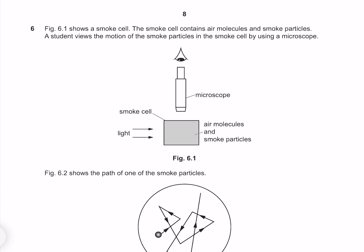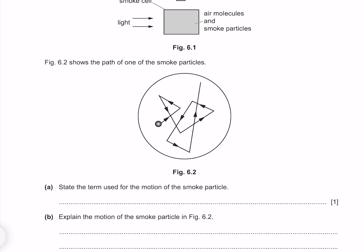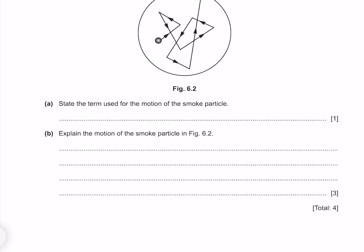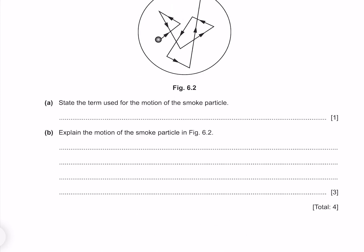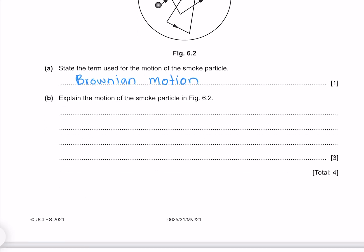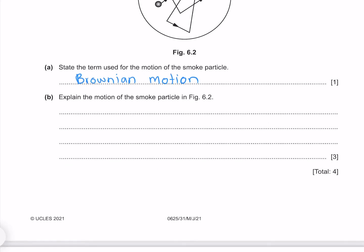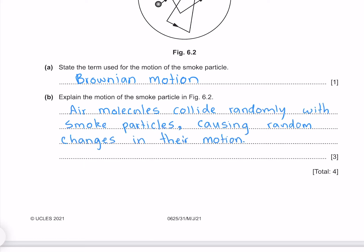Figure 6.1 shows a smoke cell. The smoke cell contains air molecules and smoke particles. A student views the motion of the smoke particles in the smoke cell by using a microscope. Figure 6.2 shows the path of one of the smoke particles. State the term used for the motion of the smoke particle, which is of course Brownian motion. Explain the motion of the smoke particle. Air molecules collide randomly with smoke particles, causing random changes in their motion.